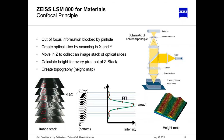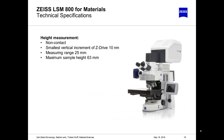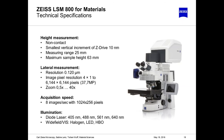Here are some technical data from the LSM 800 for materials. You can position samples with a height up to 63 millimeters under the microscope, and you have a vertical scanning range in the Z direction of up to 25 millimeters. Thanks to the high performance optics, we achieve lateral resolutions down to 120 nanometers with an amazing pixel count of 37.7 megapixels. For different applications, especially for fluorescence with synthetic materials, a large variety of illumination possibilities are offered.